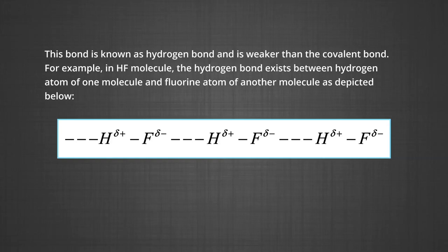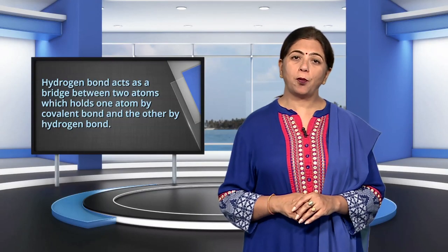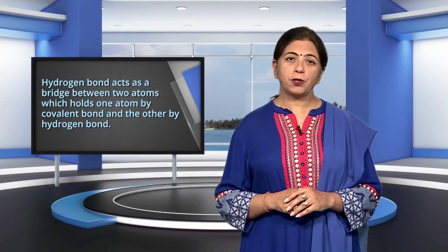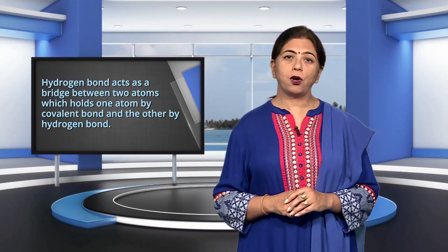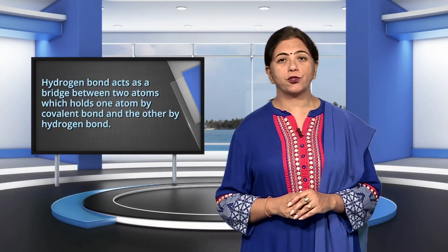For example, in hydrogen fluoride, the hydrogen bond exists between the hydrogen atom of one molecule and the fluorine atom of another molecule, as depicted in the figure. You can see that there is a hydrogen bond between the fluorine of one HF molecule and the hydrogen of another hydrogen fluoride molecule. Here, the hydrogen bond acts as a bridge between two atoms, holding one atom by the covalent bond and the other by the hydrogen bond.